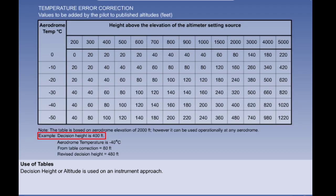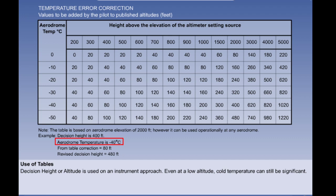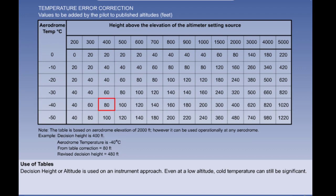Suppose that our decision height is 400 feet. Assume a temperature of minus 40 degrees Celsius. At sea level, that's 55 degrees colder than ISA. It will make a difference even with a low vertical distance. Look in the table where minus 40 meets 400. This is a correction of 80 feet. So we must use an indicated decision height of 480 feet.